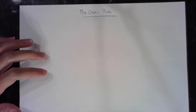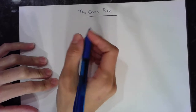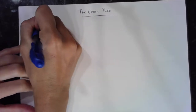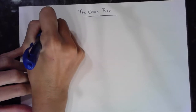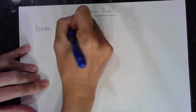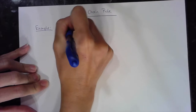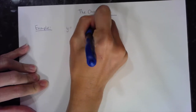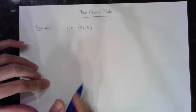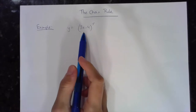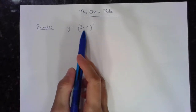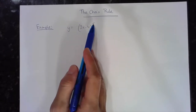I'm going to do a couple of examples of the chain rule — finding the first derivative using the chain rule. You know that you have a chain rule when you have situations like this. For example, y is equal to 3x minus 4 to the fifth power. Instead of just x to the fifth power, you see it's an expression of x to the fifth power.